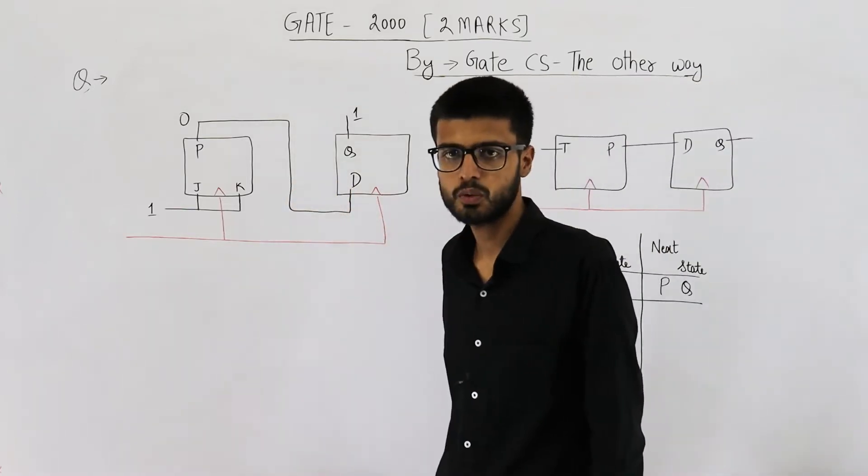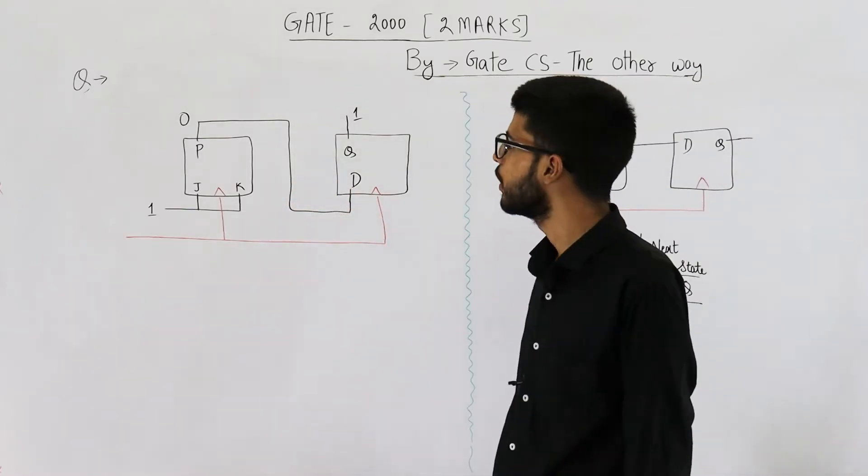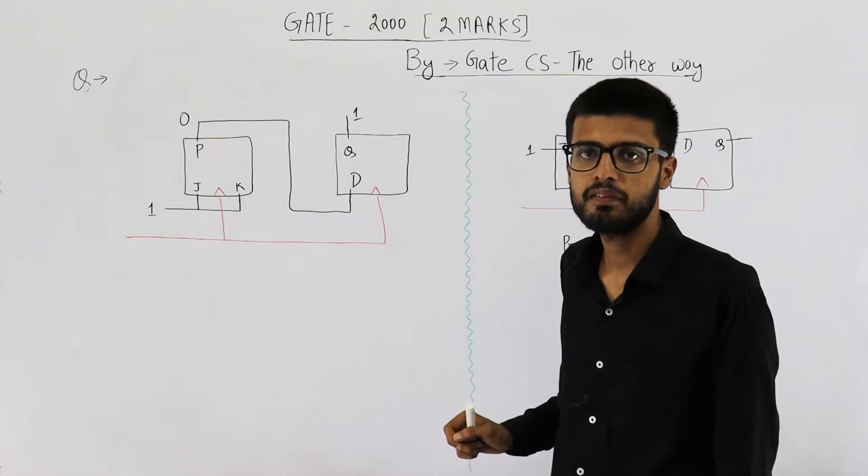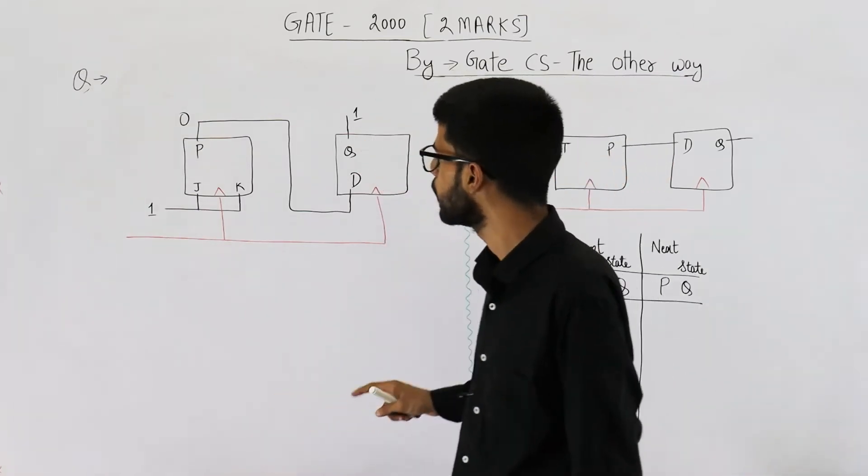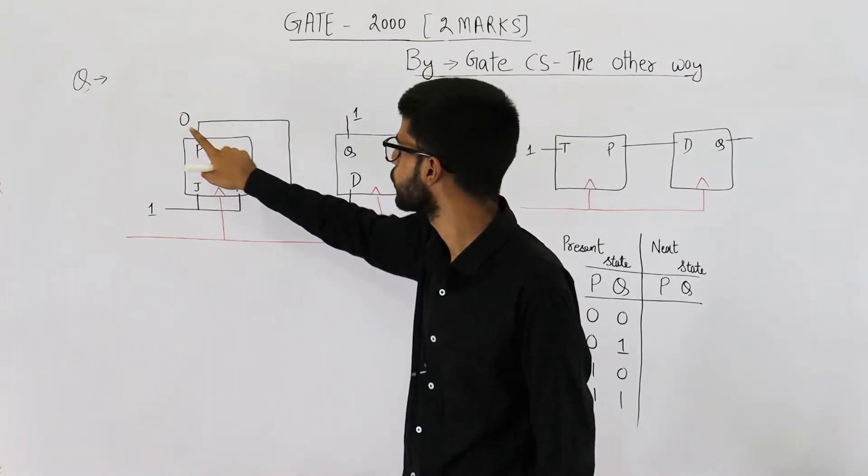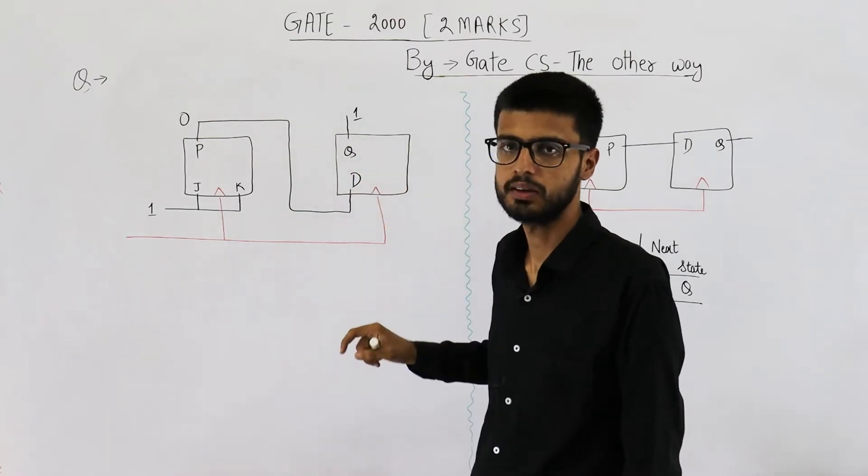They have given you this counter in the question and they're asking what will be its state after three clock signals. Current state is given as P is equal to zero and Q is equal to one, that means zero one.